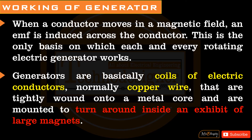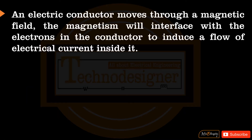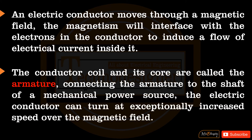Generators are basically coils of electric conductors, normally copper wire, that are tightly wound onto a metal core and are mounted to turn around inside an array of large magnets. As an electric conductor moves through a magnetic field, the magnetism will interface with the electrons in the conductor to induce a flow of electrical current inside it. The conductor coil and its core are called the armature, connecting the armature to the shaft of a mechanical power source so the electric conductor can turn at exceptionally high speed over the magnetic field.